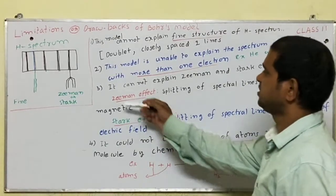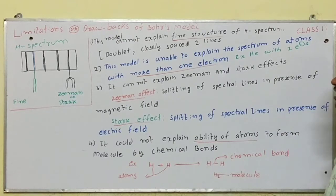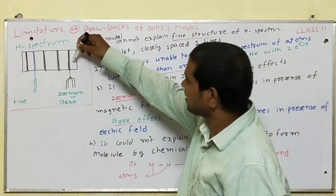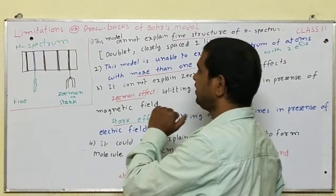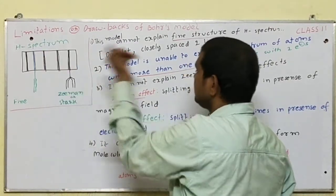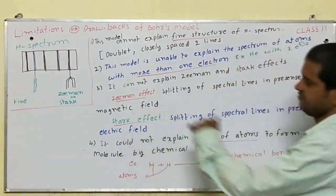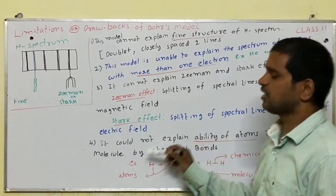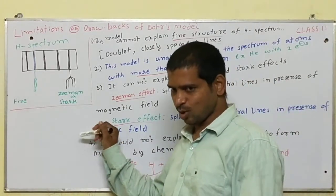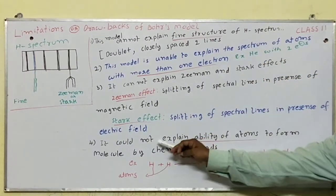The third defect is it cannot explain Zeeman and Stark effects. Spectral lines in hydrogen spectrum in presence of magnetic field split into several lines. This is known as Zeeman effect. In the same way, splitting of spectral lines in presence of electric field is known as Stark effect.